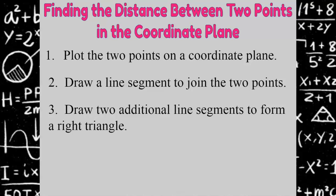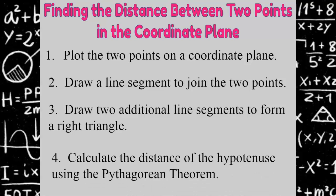Third, we will draw two additional line segments to form a right triangle. Fourth, we'll calculate the distance of the hypotenuse of the triangle we created using the Pythagorean Theorem.